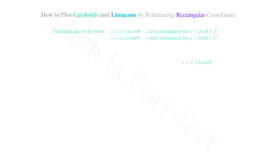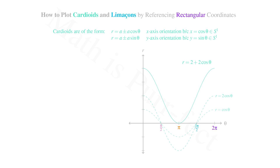Let's consider r = 2 + 2cos(θ). I would like to plot this polar curve by first analyzing its rectangular graph. To that end, I first plot the graph of r = cos(θ), wherein theta is the independent variable. This is our standard graph for cosine of theta. Now let's plot 2cos(θ), which stretches the graph vertically by a factor of 2. Finally, we add 2 to the previous graph, which translates the graph vertically up 2 units. This is the rectangular representation of our cardioid.